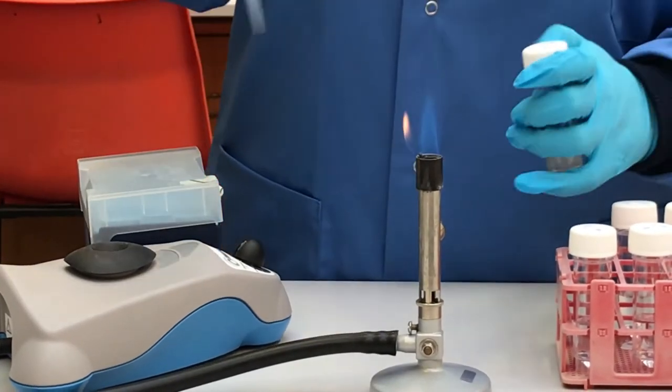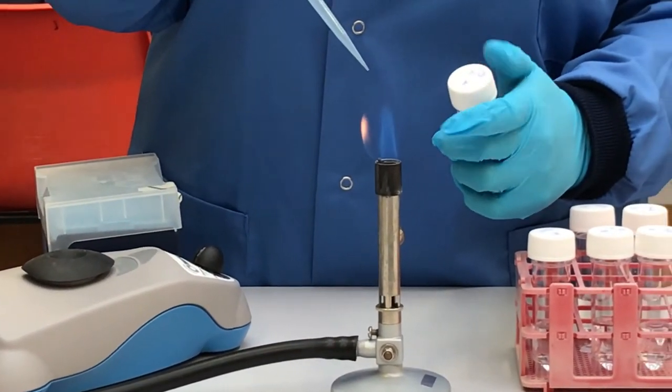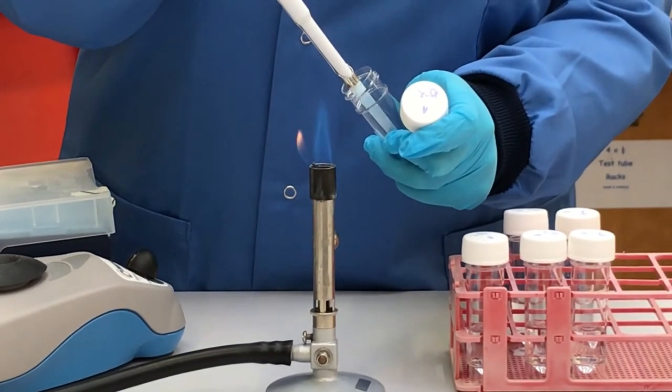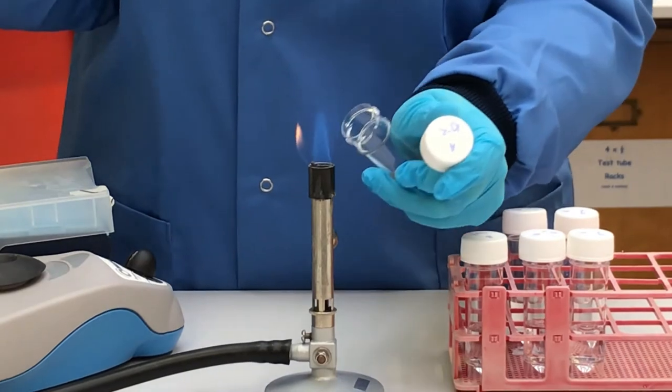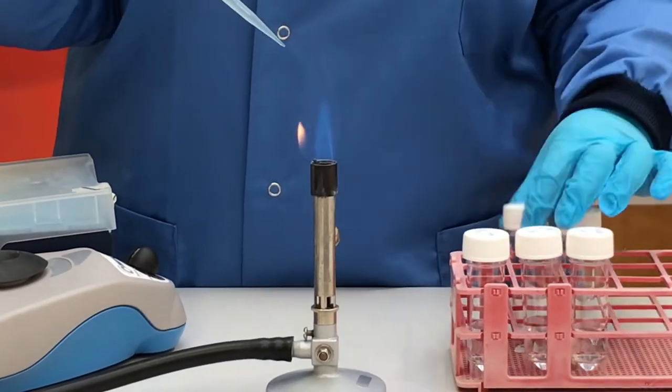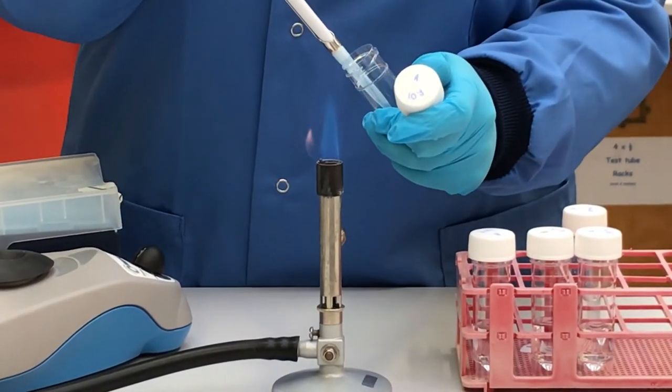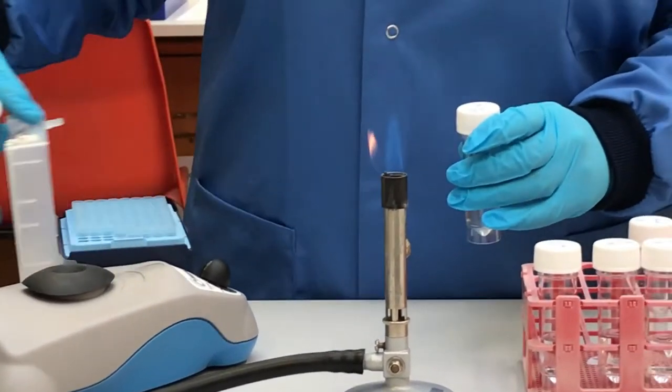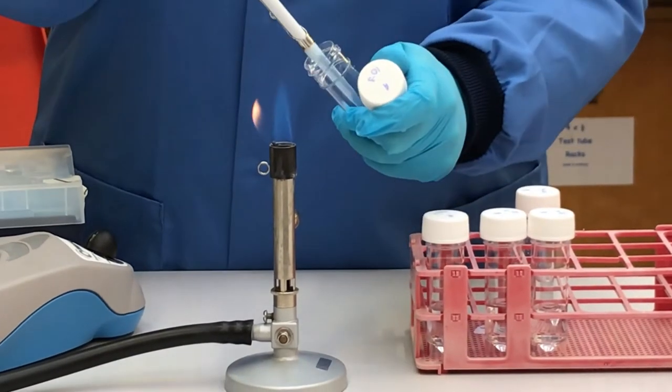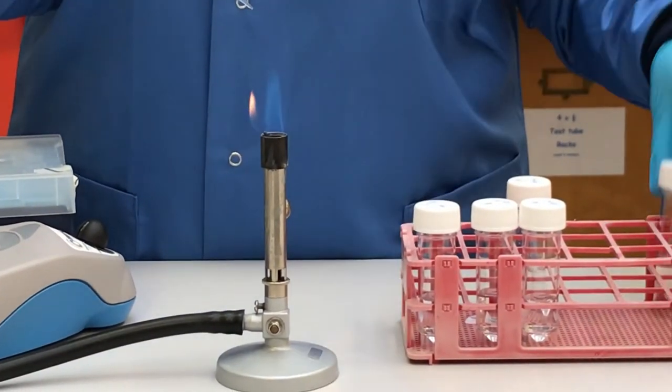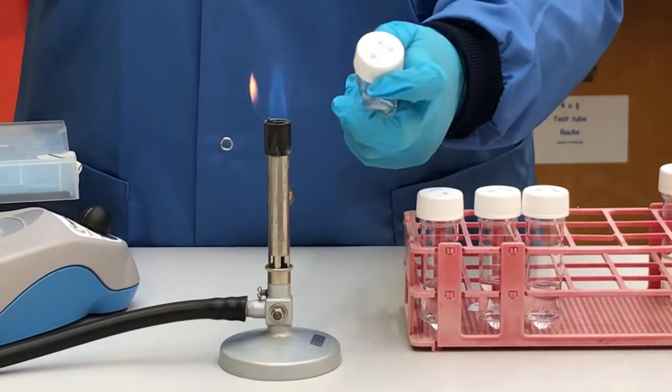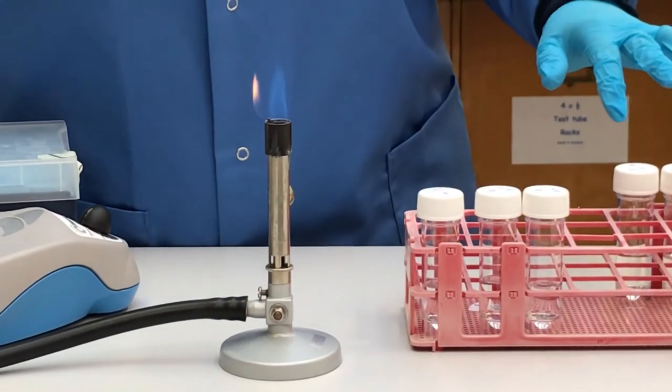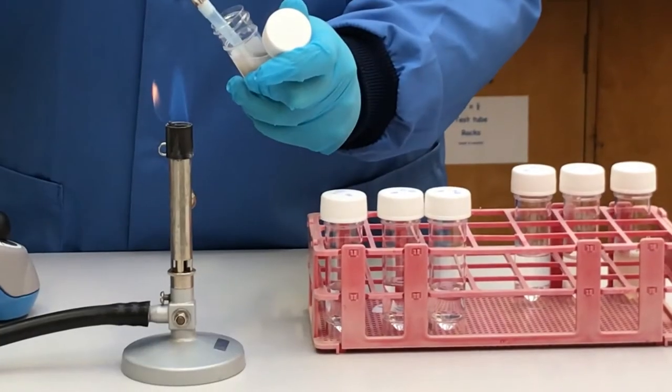This sample represents your minus 2 dilution and is used to prepare your minus 3 dilution using the same method as previously employed. Repeat this process for the 10 to the minus 4 dilution. Don't forget to vortex this sample. Repeat this process using Sample B.